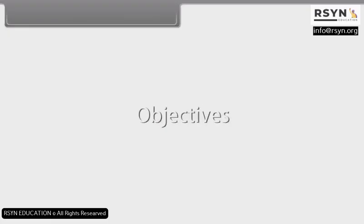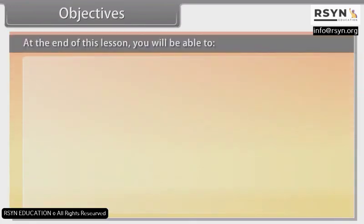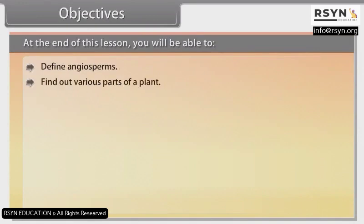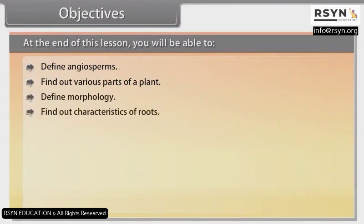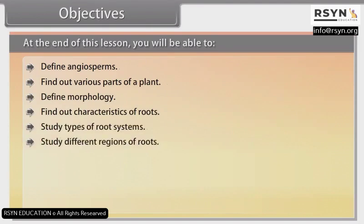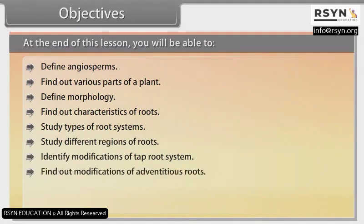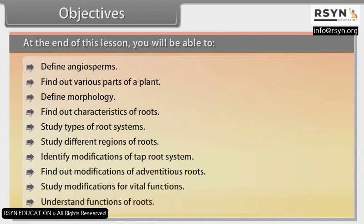Objectives: At the end of this lesson, you'll be able to define angiosperms, find out various parts of a plant, define morphology, find out characteristics of roots, study types of root systems, study different regions of roots, identify modifications of tap root system, find out modifications of adventitious roots, study modifications for vital functions, and understand functions of roots.